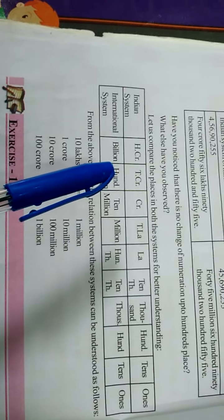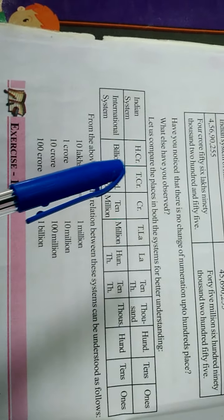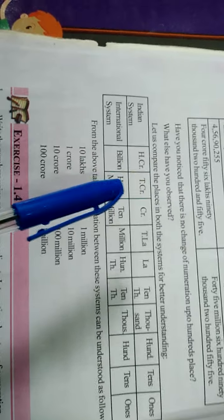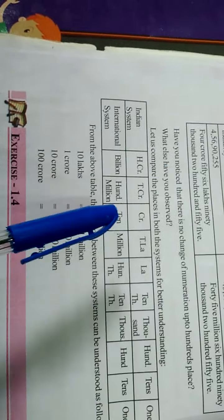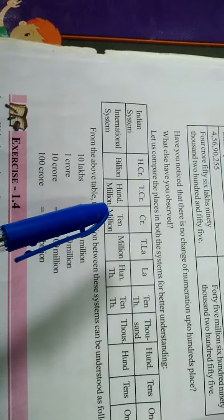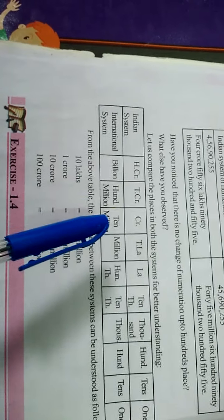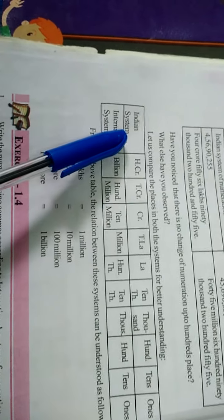In your daily life, when you dial a mobile number you are typing ten digits. So ten digits means it is hundred crores in the Indian system and one billion in the International system.